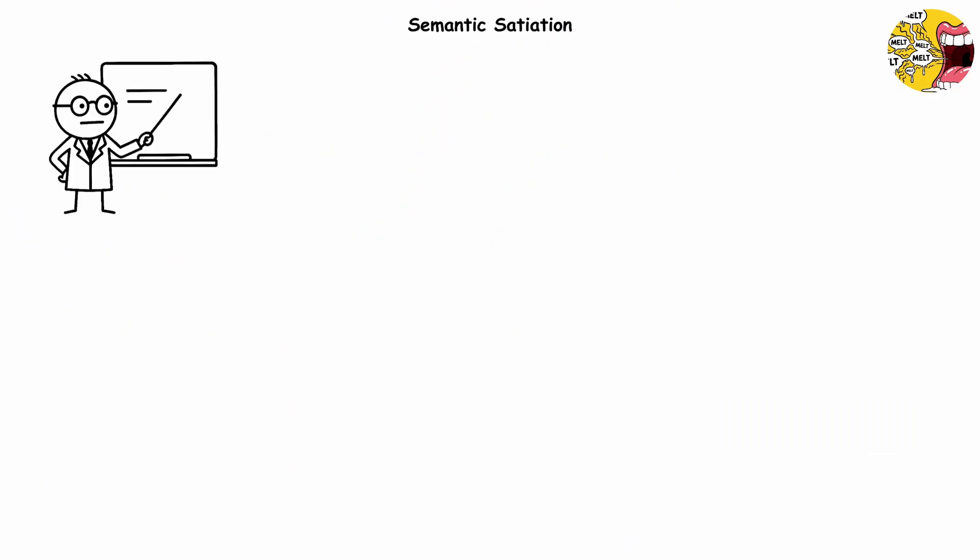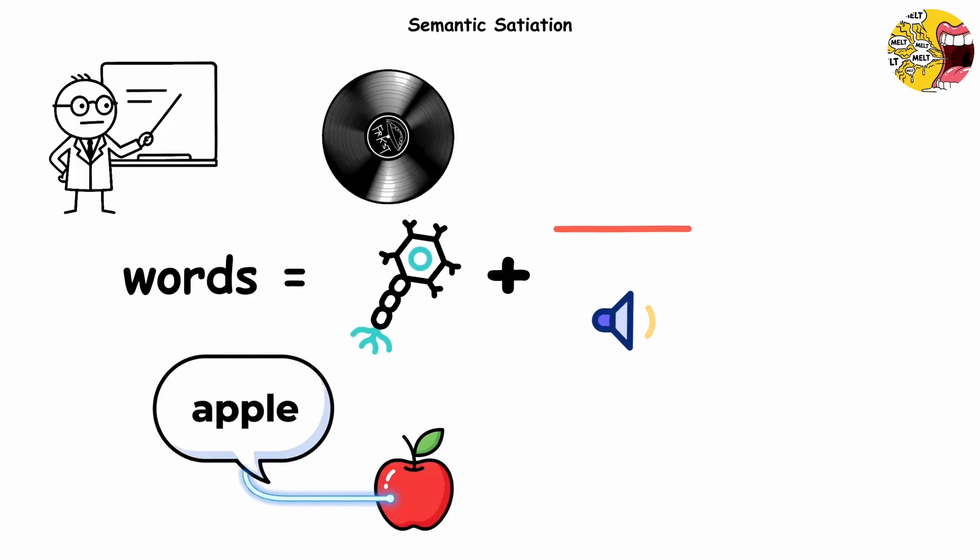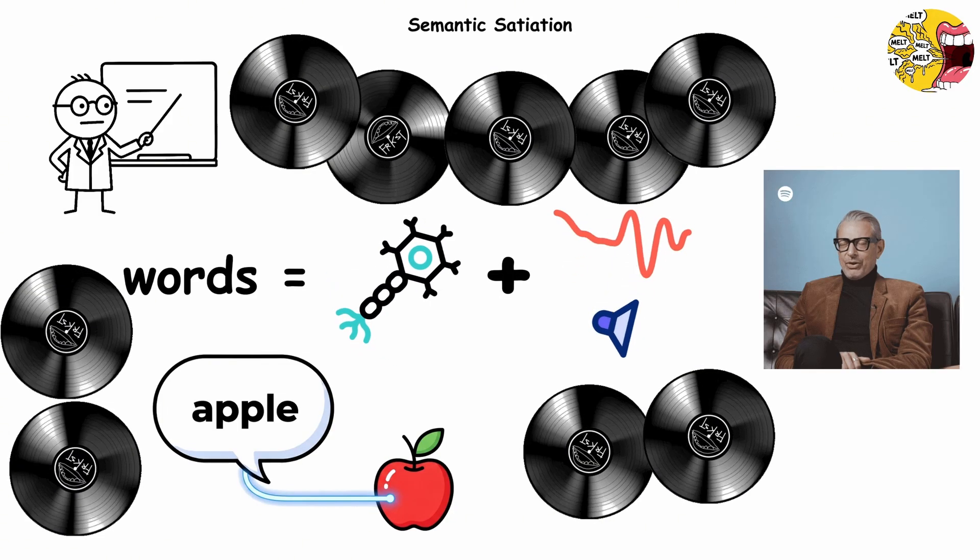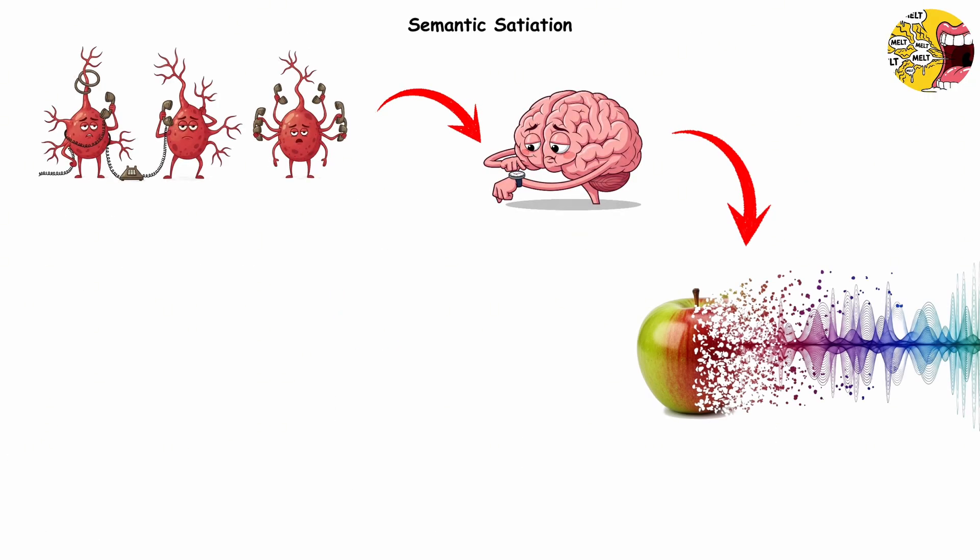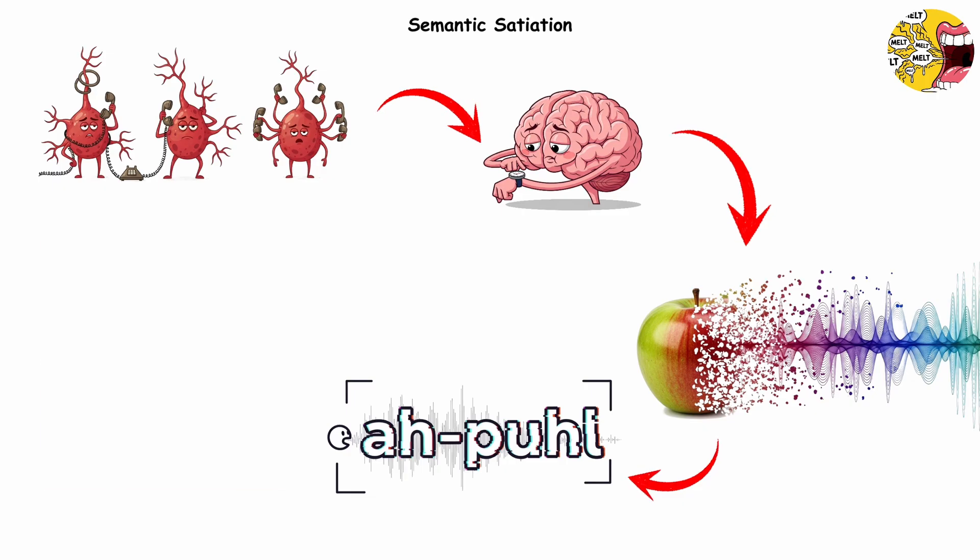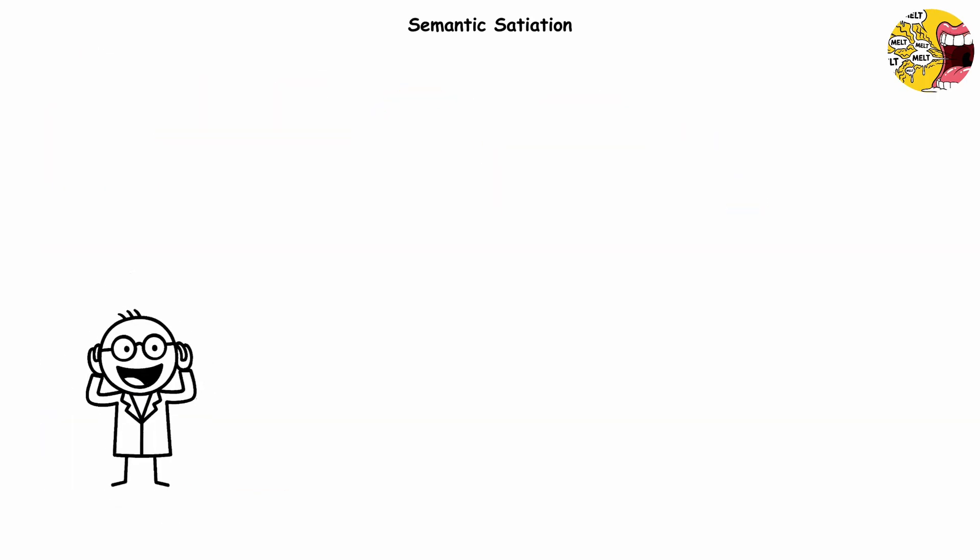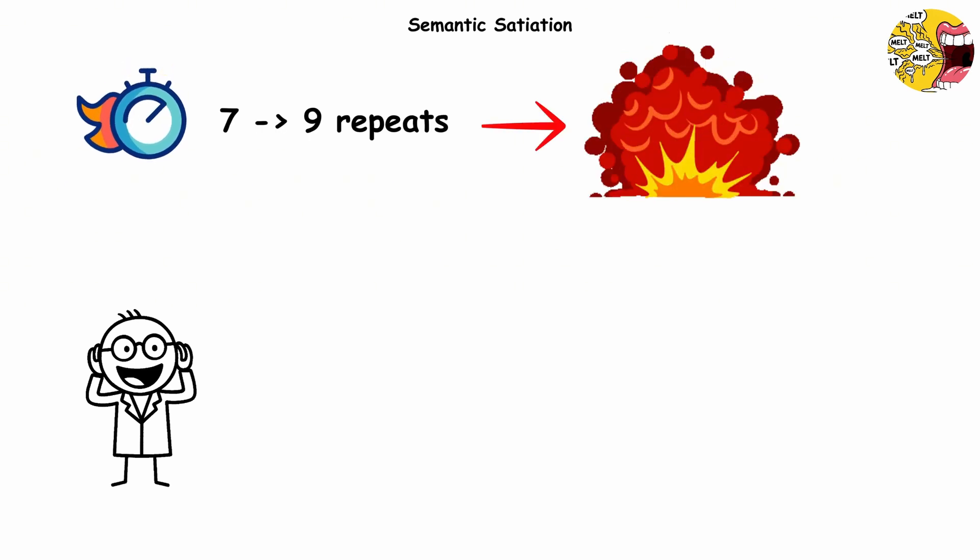Here's why it happens. Words are powered by circuits linking sound to meaning. But repeat the same track too many times, and those circuits get tired. The neurons start phoning it in, and your brain checks out. Suddenly, apple isn't fruit. It's just ah-pul, some weird noise you'd expect from a broken Roomba. The funny part? It doesn't take long. Seven to nine repeats is enough to nuke the meaning.